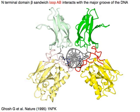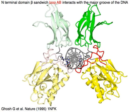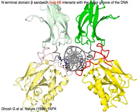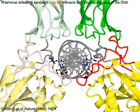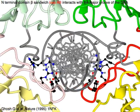The N-terminal domain in yellow forms a beta sandwich, and loop AB in red interacts with the major groove of the DNA.